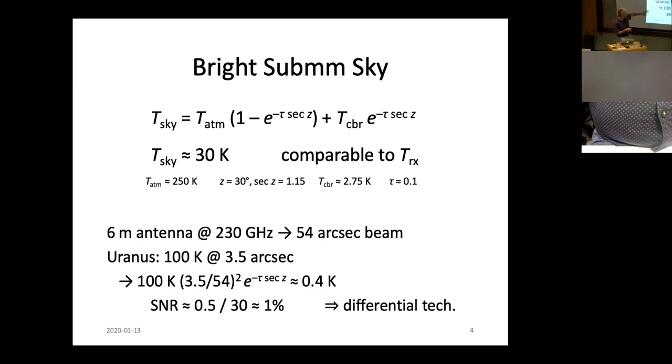And just to finish up, how bright are the sources we're looking at? We're looking at this 30-degree brightness sky. What's a typical source brightness? Well, Uranus is a calibrator. It's a planet in the outer atmosphere, but it's one of the things we use as calibrators. It's pretty small, three and a half arc seconds. Our six-meter antennas at the SMA have a beam width at 230 gigahertz of about 54 arc seconds. Uranus is about 100 degrees. It's cold in the outer solar system, but its radiation temperature is about 100 degrees. But this is just this little spot in the middle of a big beam. So it's diluted by the beam area.